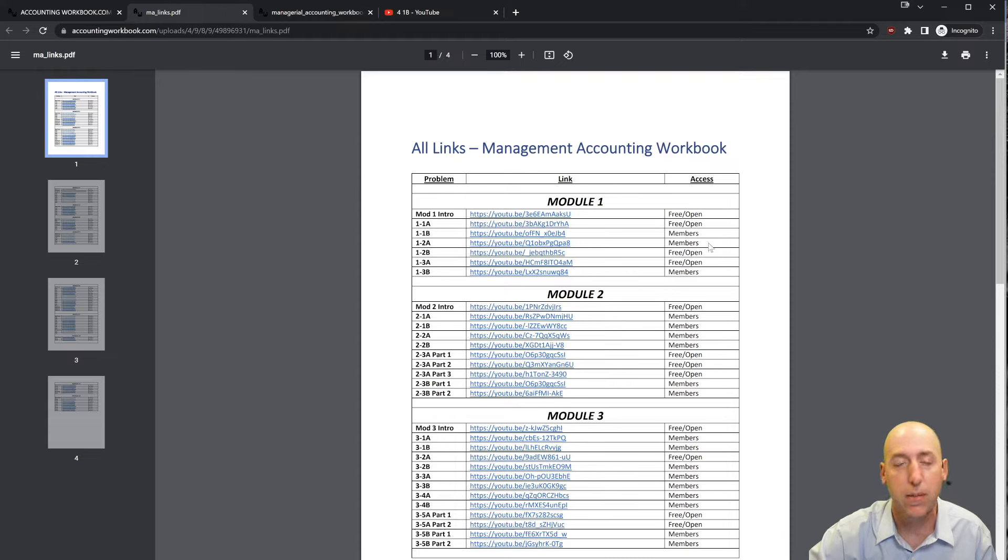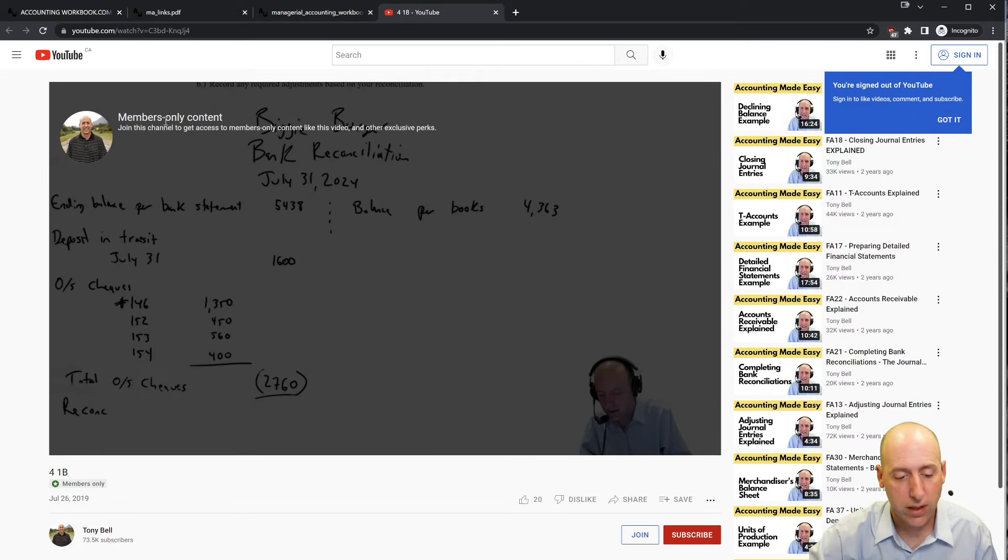About 40% of my videos are free and open, the other 60% are for members. If you click one of the members links, it'll take you to a page that says members only content. If you'd like access to that content, just hit the join button. Okay, let's jump into the problem.